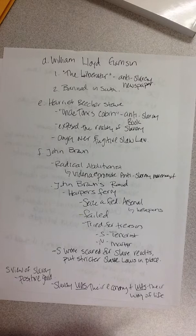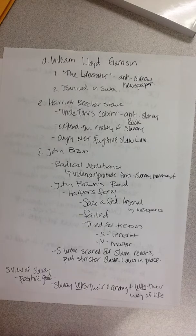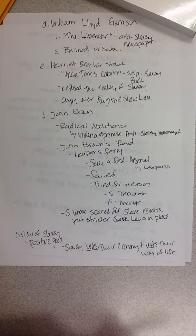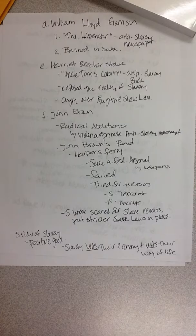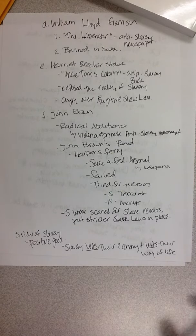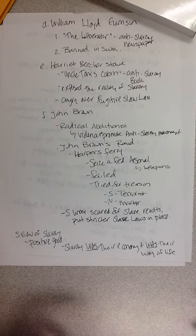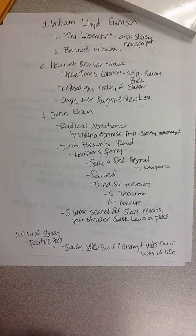Harriet Beecher Stowe wrote the anti-slavery book Uncle Tom's Cabin, which exposed the reality of slavery and angered a lot of people — many became angry over the Fugitive Slave Law because of that book. John Brown is a radical abolitionist who used violence to get his message across. He completed a raid on the arsenal at Harper's Ferry, wanting to arm every slave to revolt. He truly believed God sent him to do this — he wanted to be the African Americans' Moses. He failed, was tried for treason, and the South viewed him as a terrorist while the North viewed him as a martyr who died for a good cause. The South was terrified about slave revolts and put stricter slave laws in place. The South viewed slavery as a positive good — it was their life and their economy, and without it, they would crumble.